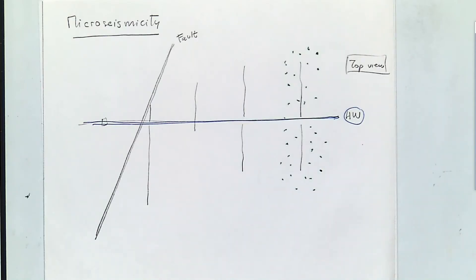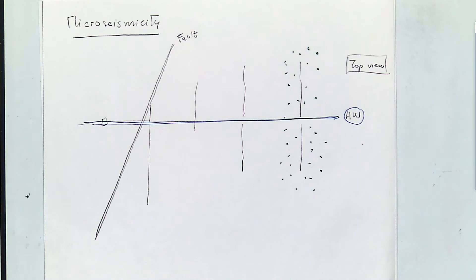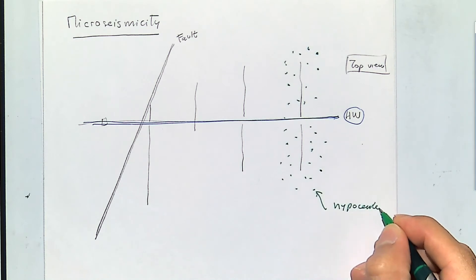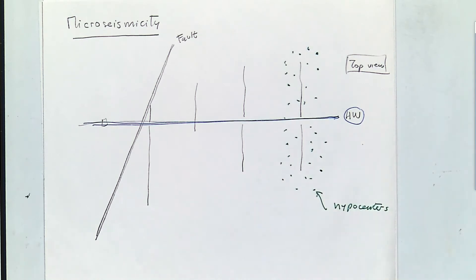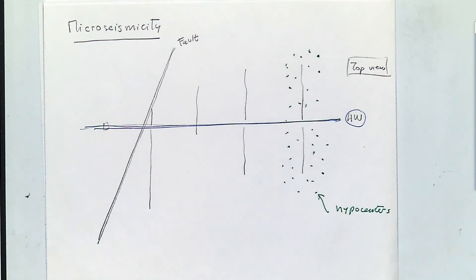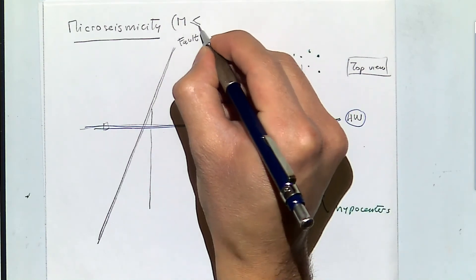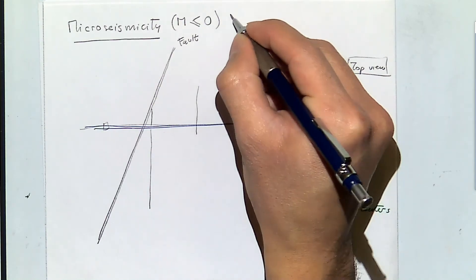This is a 2D drawing, but imagine this cloud of micro seismic events in three dimensions. All of these points are small hypocenters of acoustic emission. We call it micro seismicity because usually the magnitude of these events is less than zero on the Richter scale.